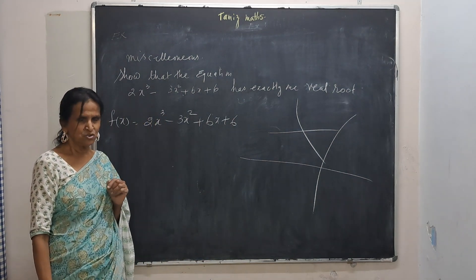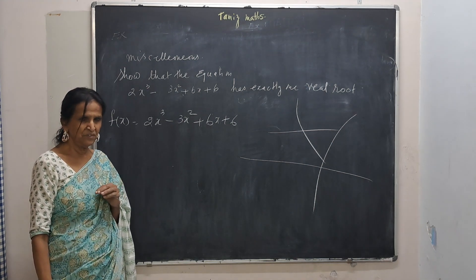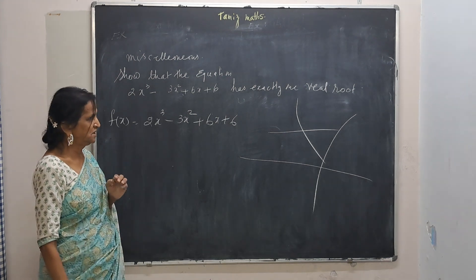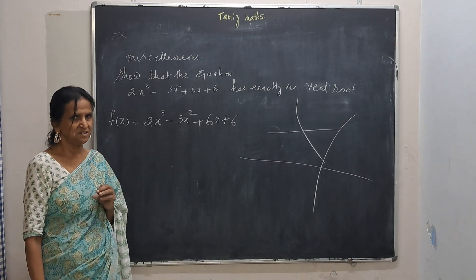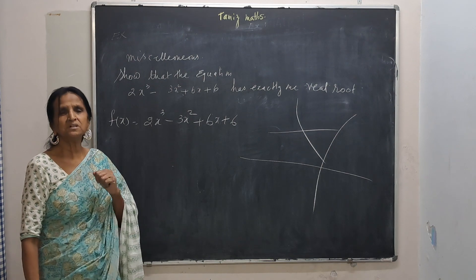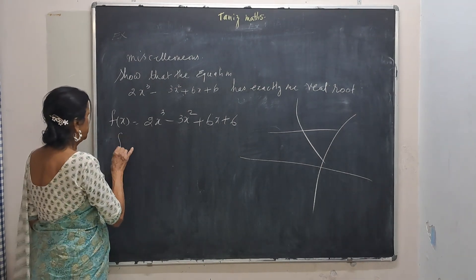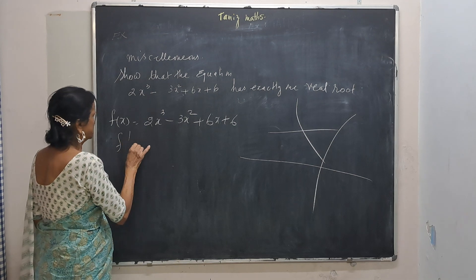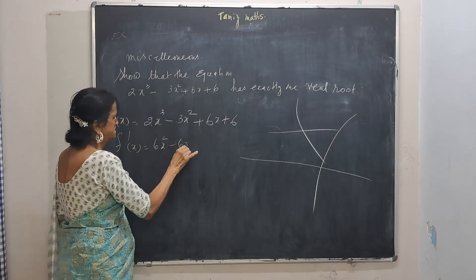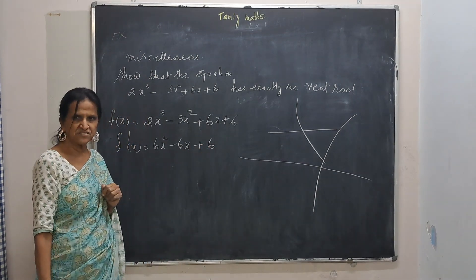Usually, questions in this area will be a little lengthy and very challenging. This is challenging too, but if you know the concept, there's nothing to it. So, F(x) is this. What's going to be F'(x)? It is 6x squared minus 6x plus 6.